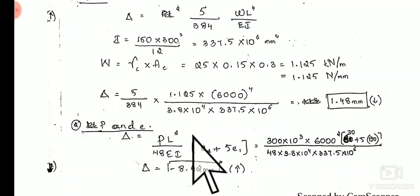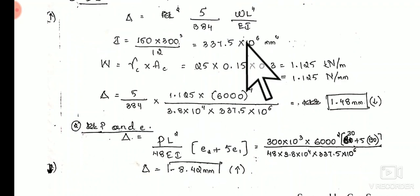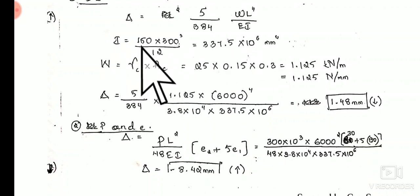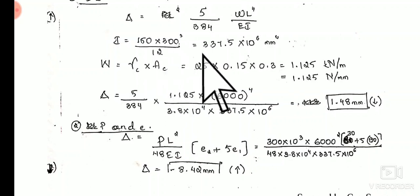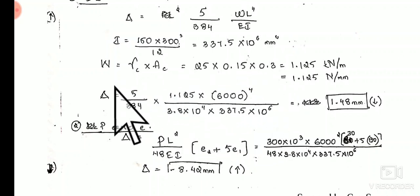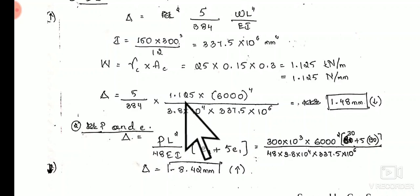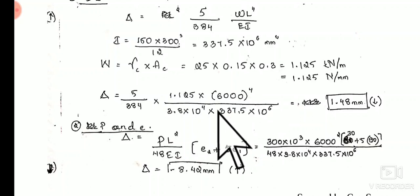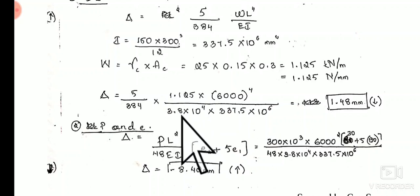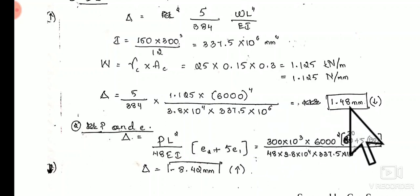Young's modulus of concrete is given as 3.8 × 10⁴ N/mm². The moment of inertia for the rectangular cross-section is Bd³/12, where B = 150 mm and d = 300 mm, giving I = 337.5 × 10⁶ mm⁴. Substituting all values: Δ = (5/384) × 1.125 × (6000)⁴ / (3.8 × 10⁴ × 337.5 × 10⁶), which equals 1.48 mm.